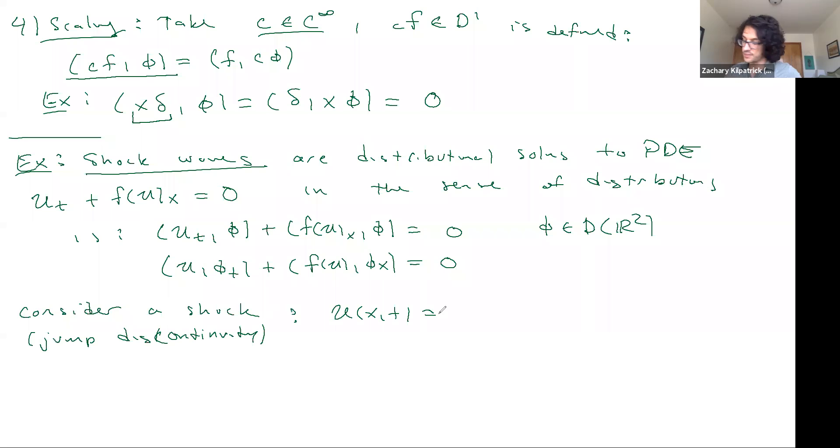And so in that case, we have U minus will be the value to the left of the kind of main characteristic of the interface and U plus will be the value greater than that interface.